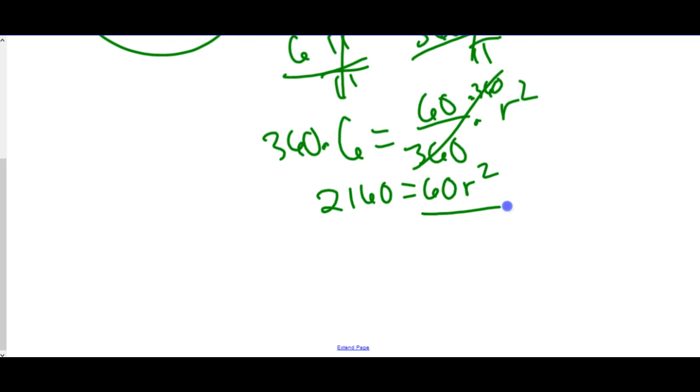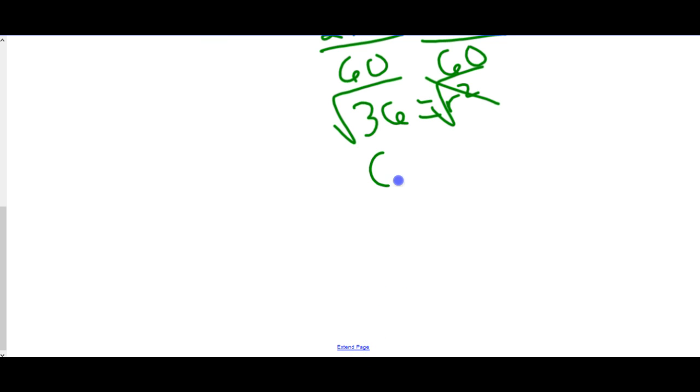On the left side, we get 2,160. Now we have to get rid of 60, which means we have to divide. Some of these steps you can combine if you feel so inclined, which gives us 36. And then our last step, which does have to be a separate step, is this squared. To get rid of squared, we have to square root. So the square root of 36 is 6 and the radius would be 6.